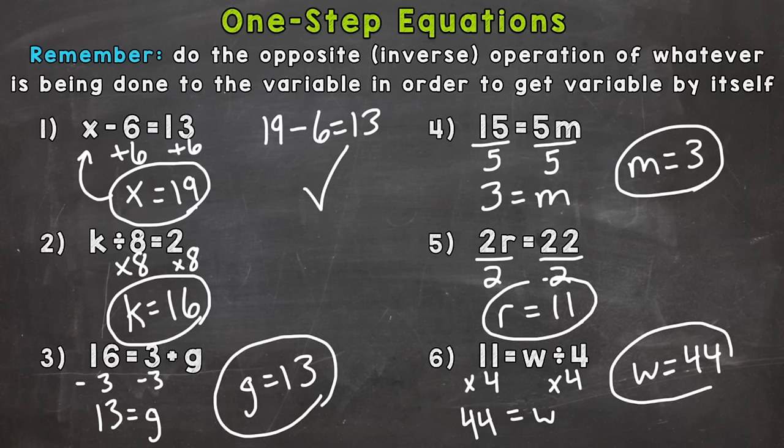And let's double check. 44 divided by 4 does equal 11. So we're good to go with number 6. So there you have it. There's how you solve one-step equations. Hopefully you found that helpful. Until next time, peace.